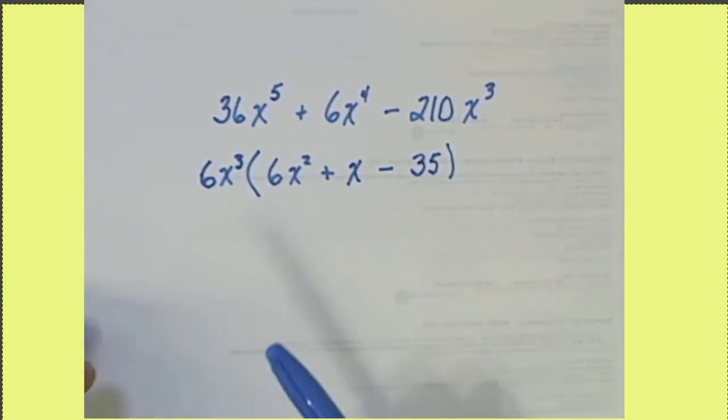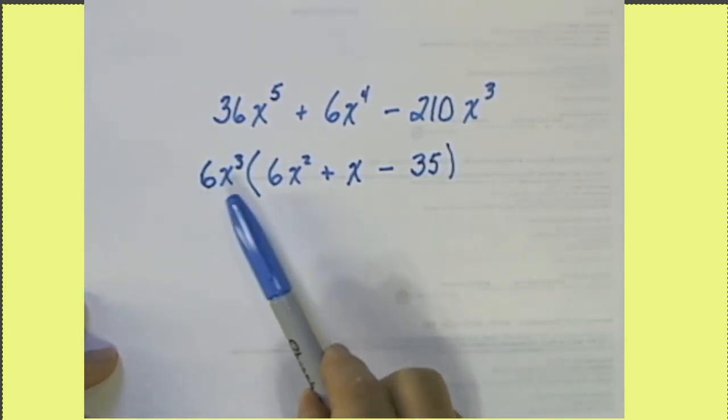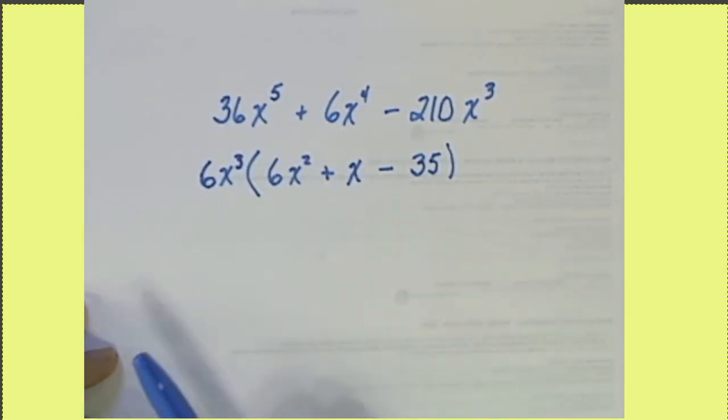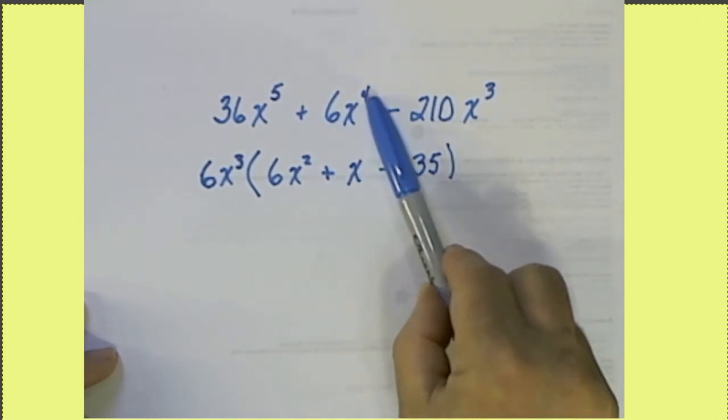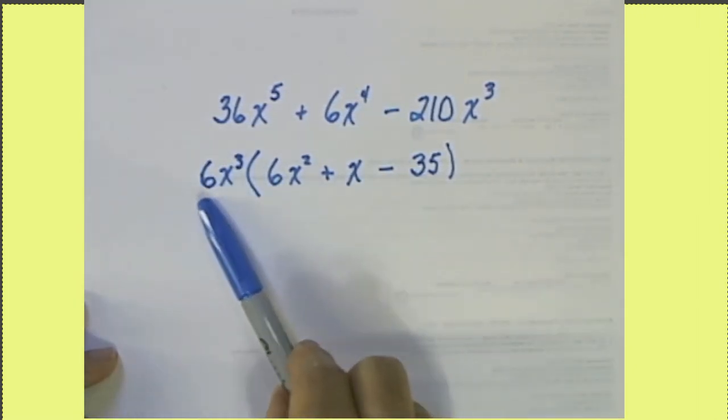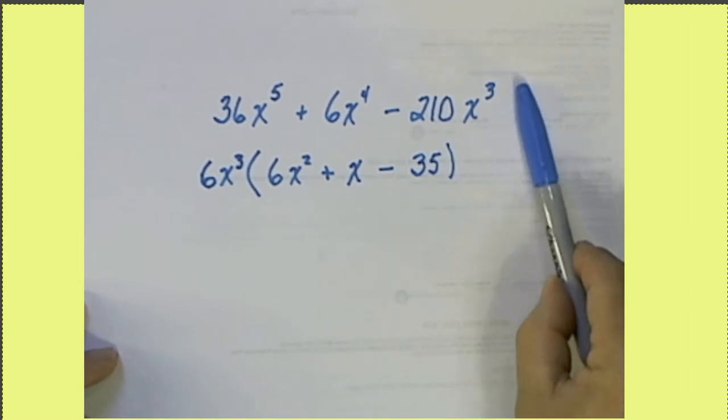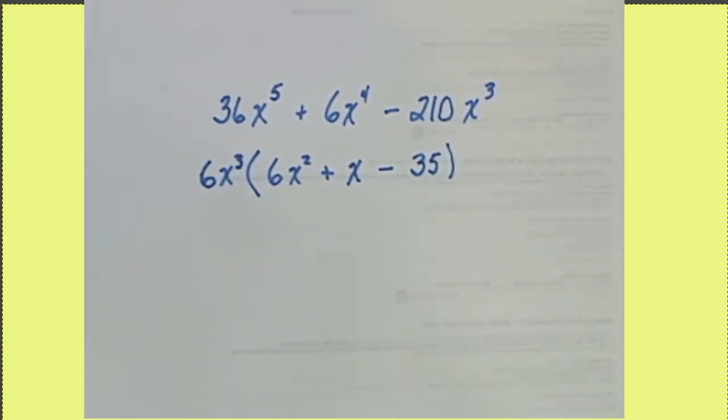And we know that this factored properly because 6X cubed times this is 36X to the 5th. 6X cubed times this is 6X to the 4th. 6X cubed times minus 35 is 210X to the 3rd power.